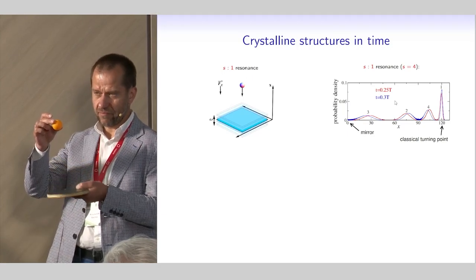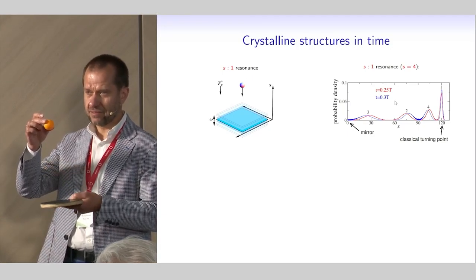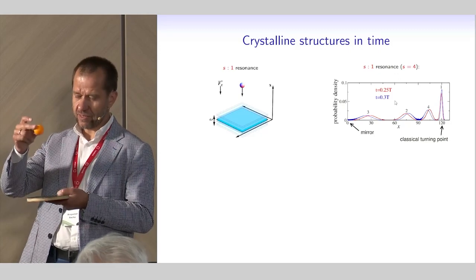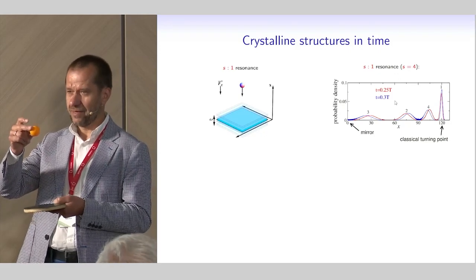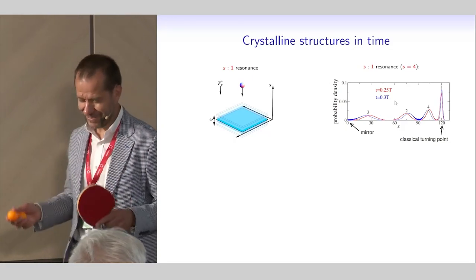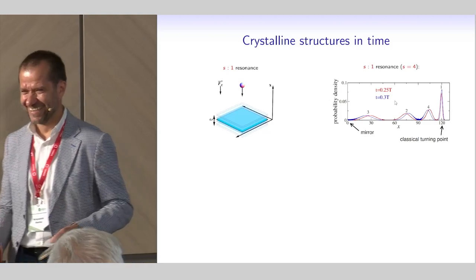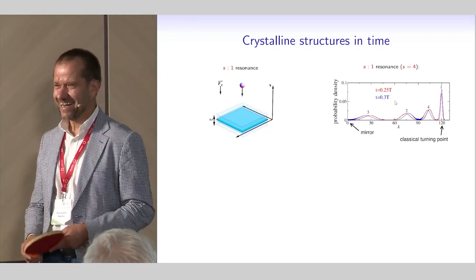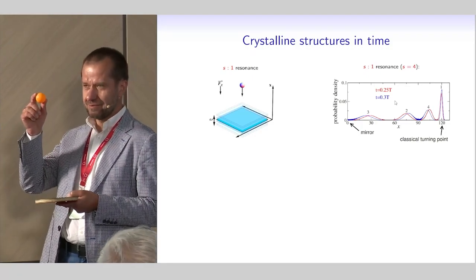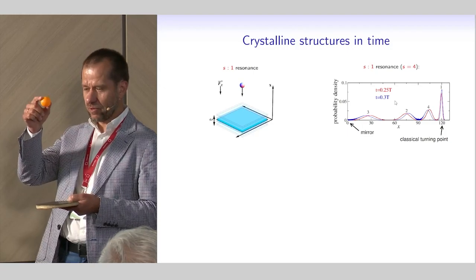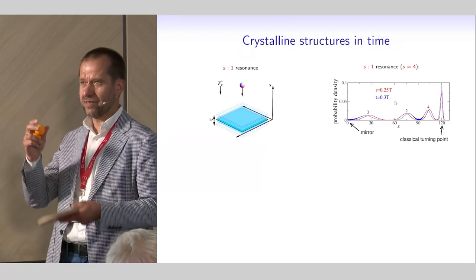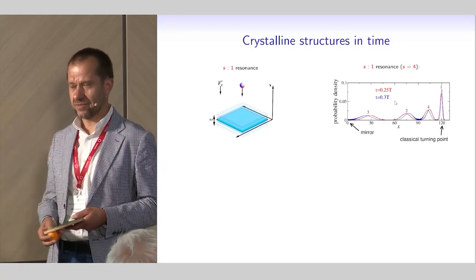If I move the bat twice faster then I can create a two-to-one resonance, because then the period of the particle motion is twice longer than the driving period. For the two-to-one resonant driving, I would keep two balls on the resonant trajectory by hitting them one by one. And of course we can go to higher and higher resonances.